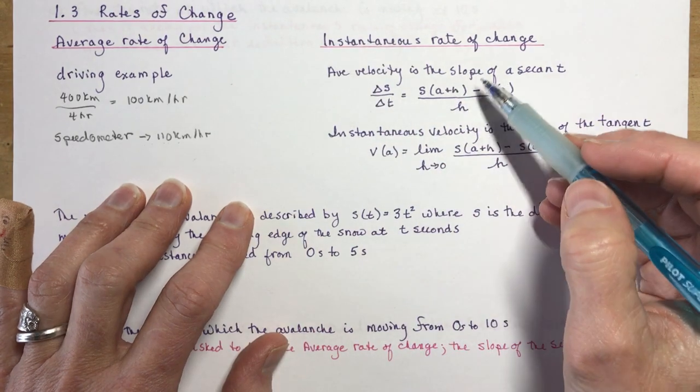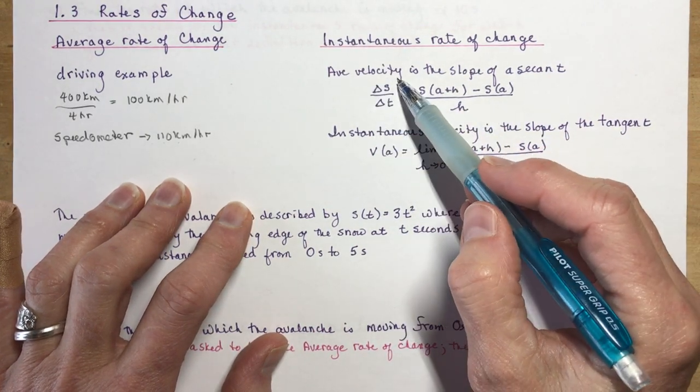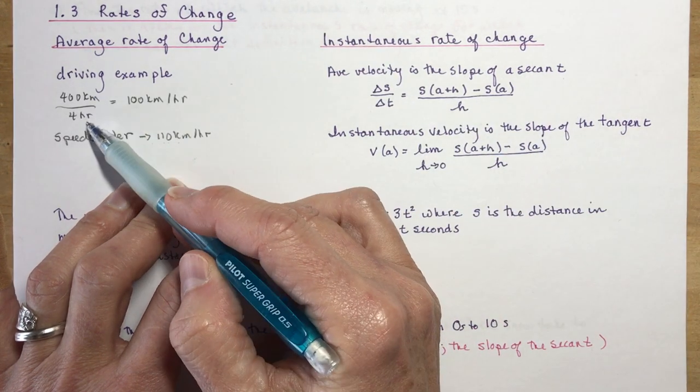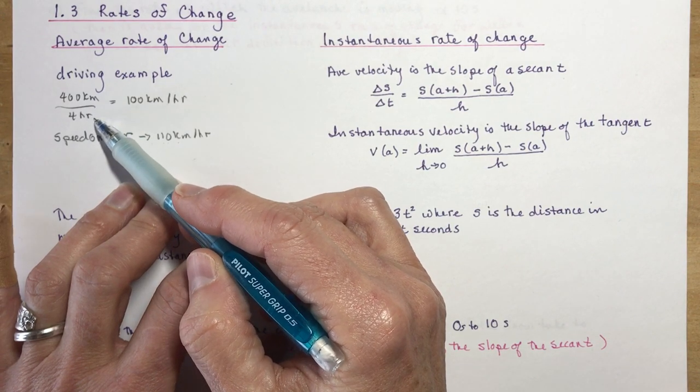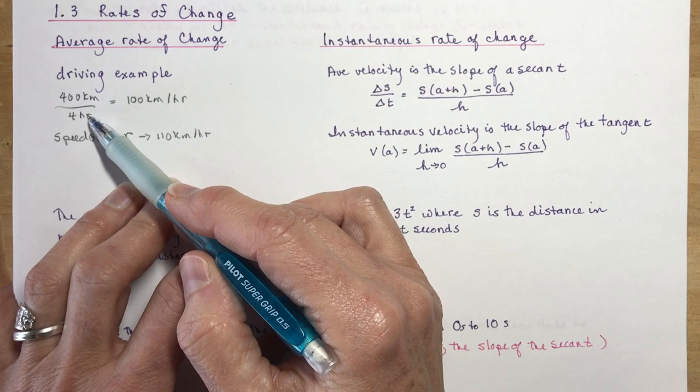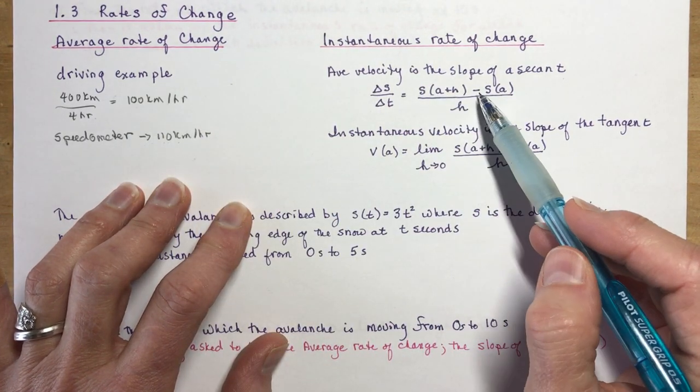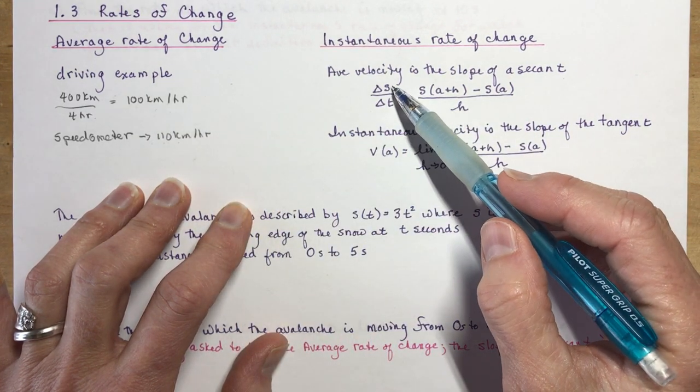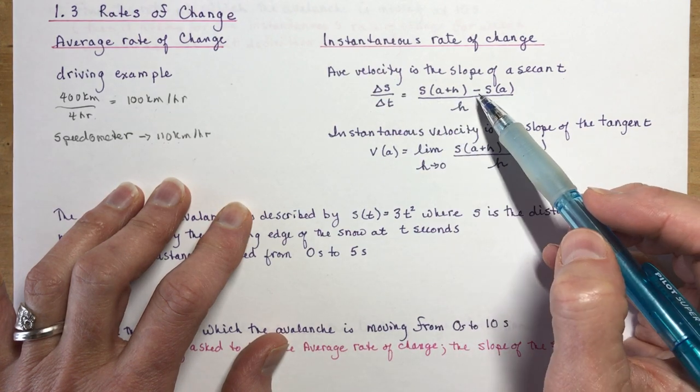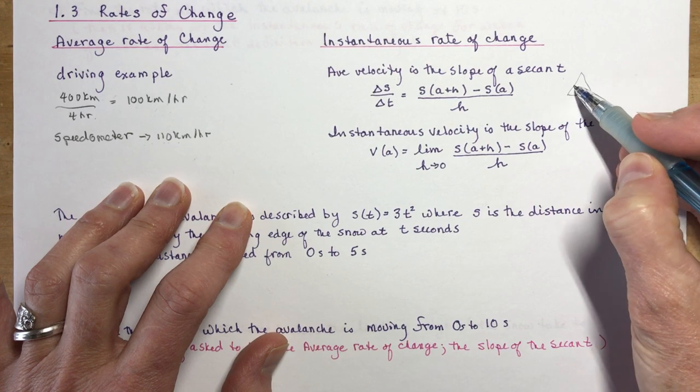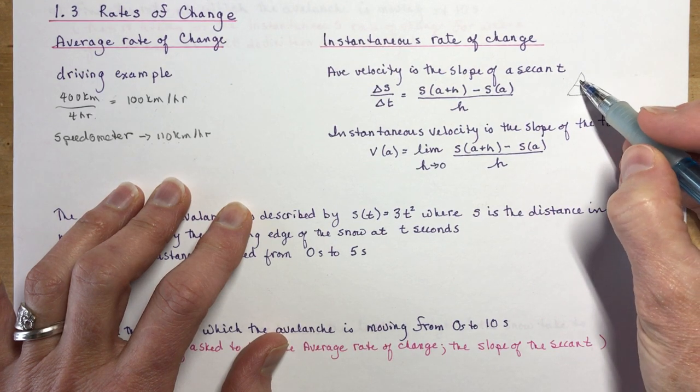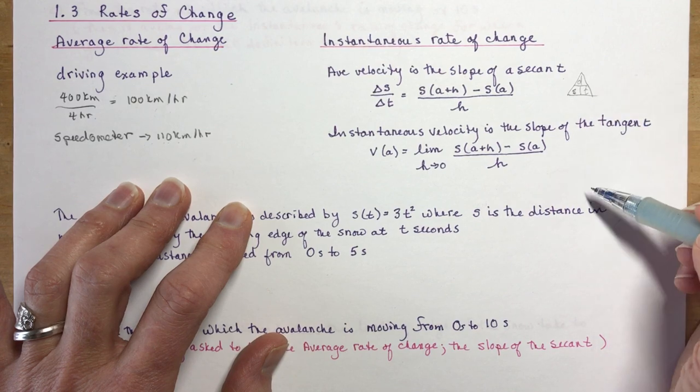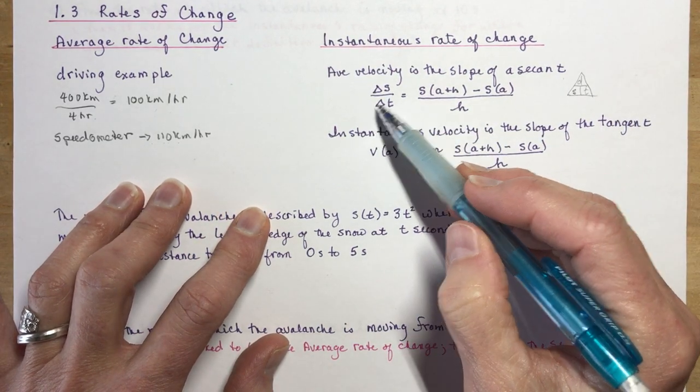In math, if we were talking about the average velocity, the average velocity is the slope of a secant. So that's 400 divided by 4, like 400 minus 0 over 4 hours minus 0 hours, which gave me 100 kilometers per hour. That's distance divided by time gives you speed, like you probably did in physics in grade 9 or 10. You had your distance, speed, time triangle. So that's your average velocity.